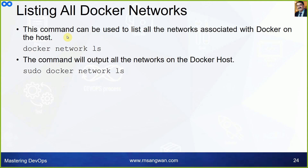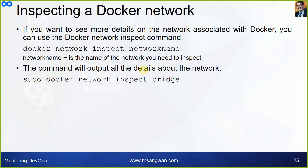To list all networks, use the command: docker network ls. This outputs all networks on your Docker host. To see more details on a specific network, use: docker network inspect <network_name>, for example, docker network inspect bridge. This gives a comprehensive output about the bridge network, useful for troubleshooting networking-related issues.